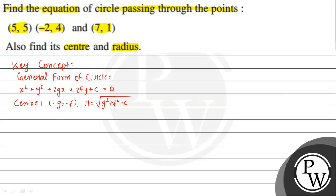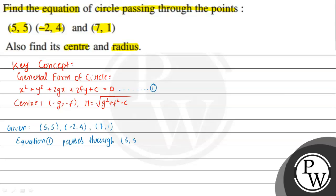The given points are (5,5), (-2,4), and (7,1). The circle's equation has been passed through by these points. We will consider the general form of the circle as equation 1. When equation 1 passes through (5,5), it must satisfy this equation. So we put x = 5 and y = 5 in equation 1.